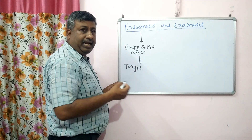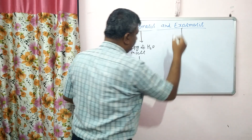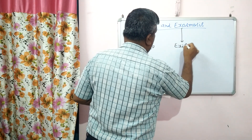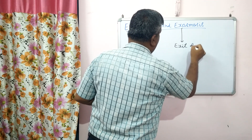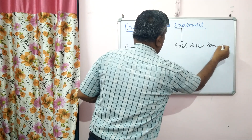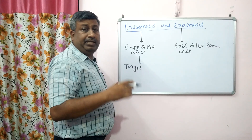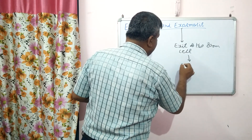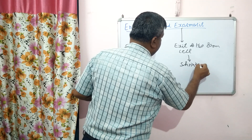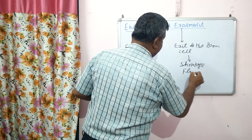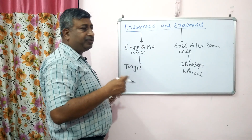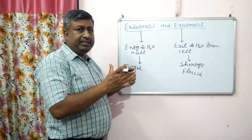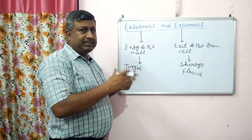In case of exosmosis, there is exit or removal of water from the cell. So water content of the cell reduces, cell size decreases, and cell shrinkage occurs. The cells become flaccid. If there is exosmosis, cell size decreases and becomes smaller and smaller and lastly it becomes flaccid.